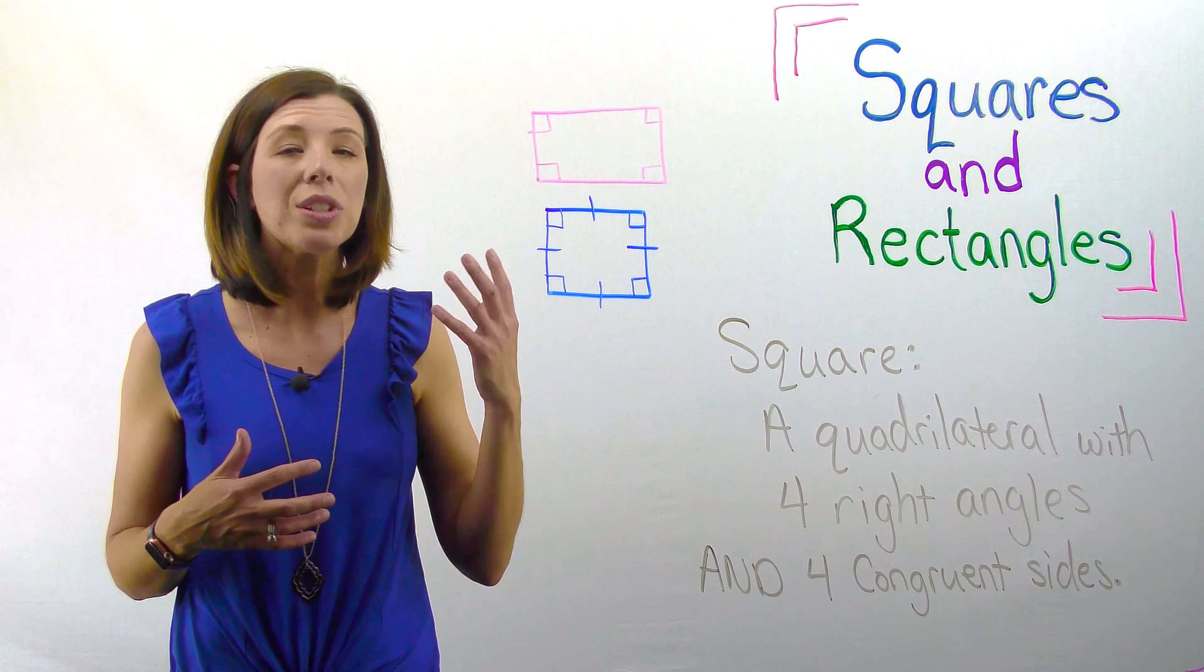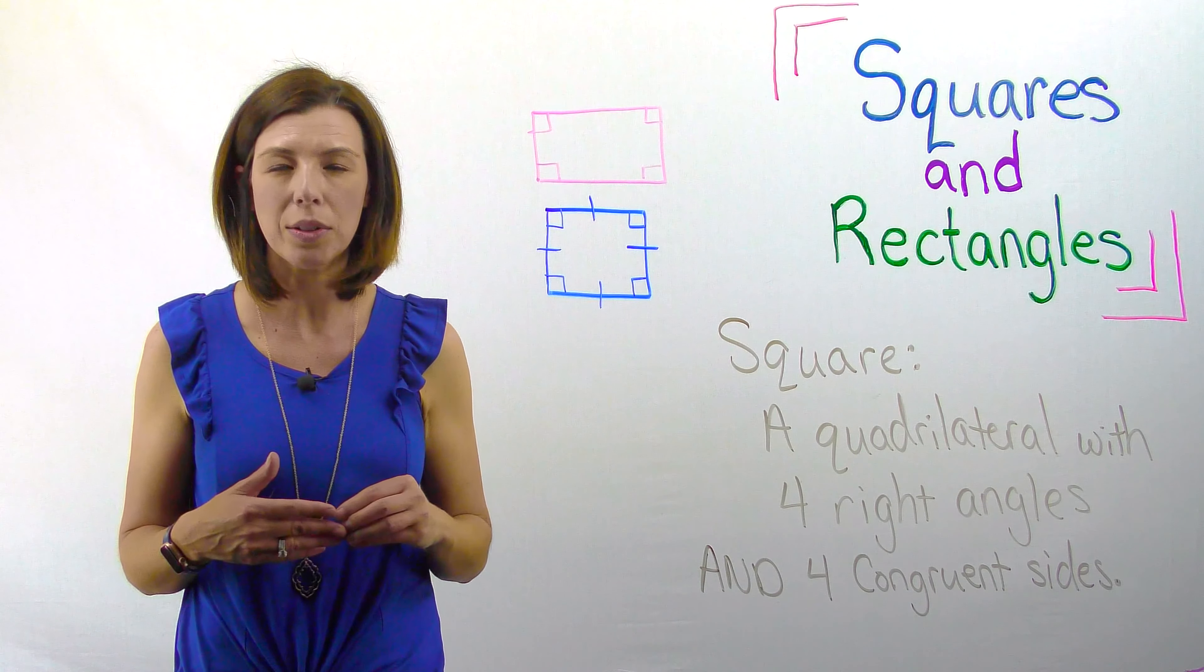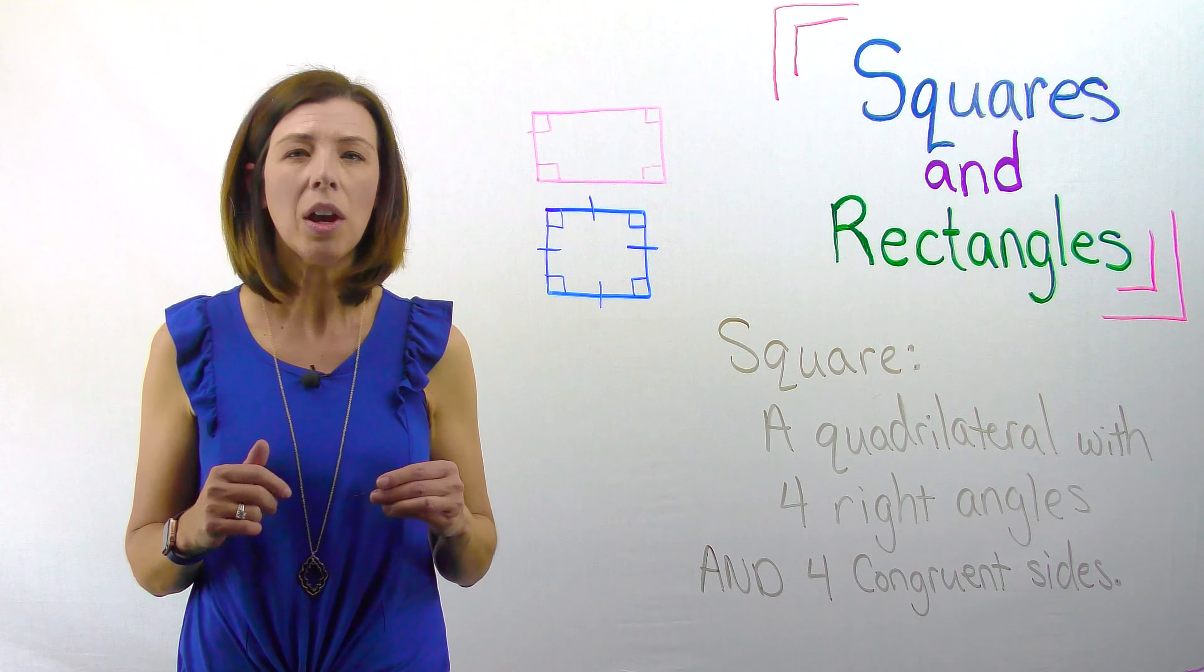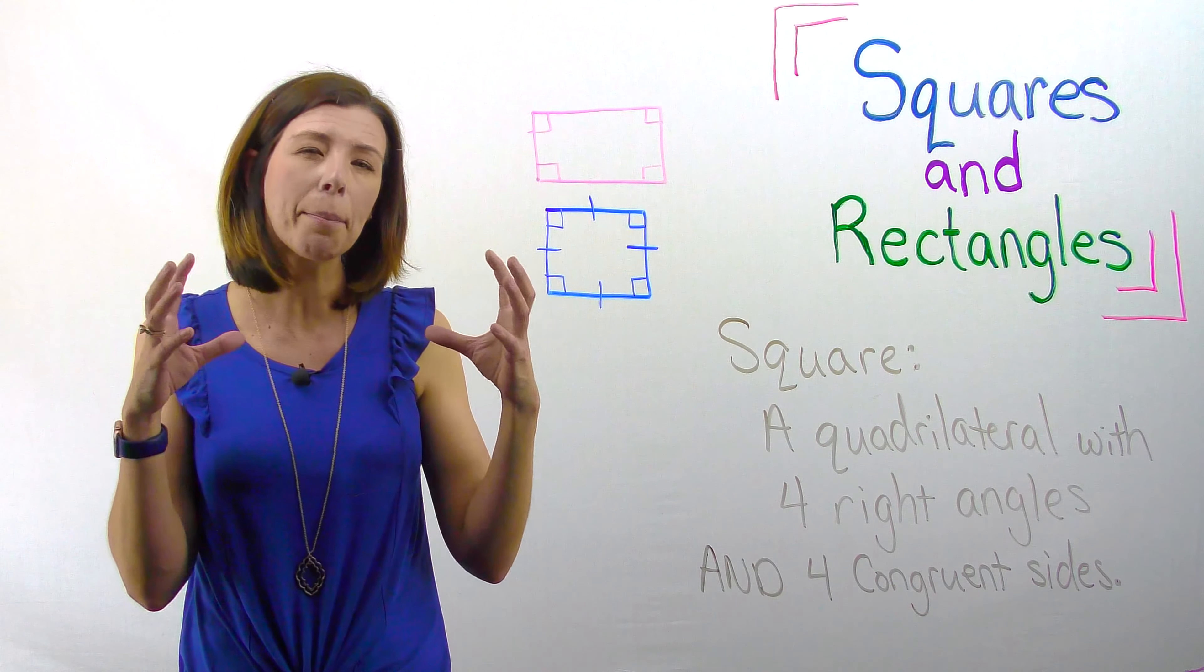Well, for it to be a square, it has to have four congruent sides. In a rectangle, do I have four congruent sides? I do not. So a rectangle cannot be a special type of square.